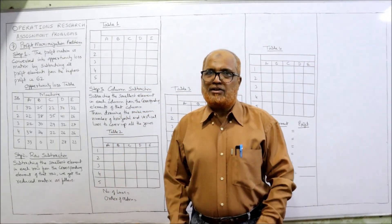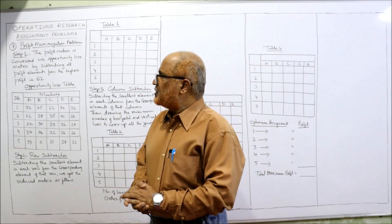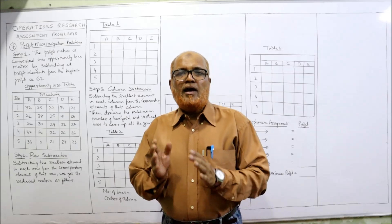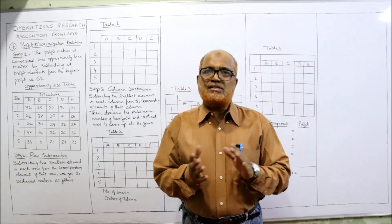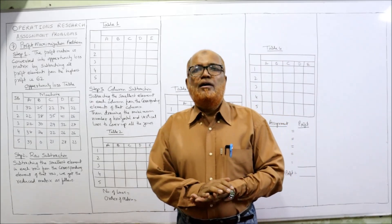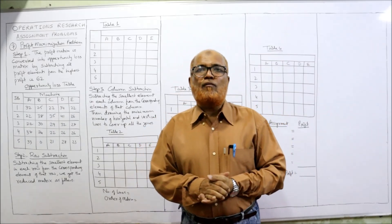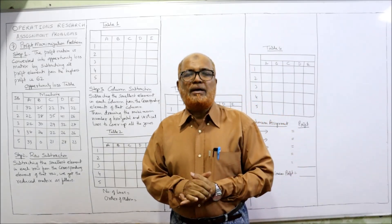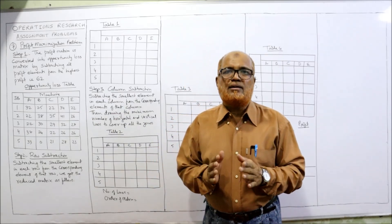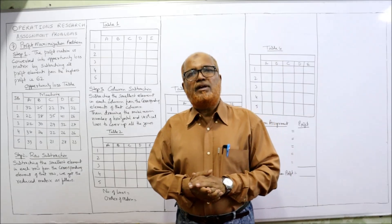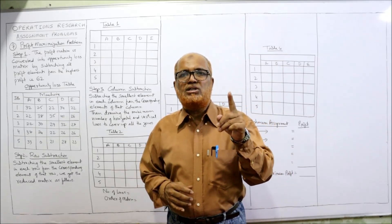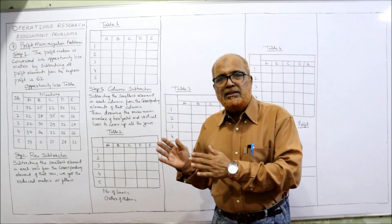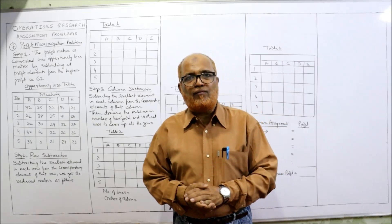Hello viewers, welcome to my channel. I'm Harsha Vali Khan. So far six problems have been completed on assignment. In this video, the seventh problem I am going to explain, and this problem is different from the first six problems. How it is different: this problem is concerned with profit maximization. The assignment algorithm given by the Hungarian mathematician is for minimization type problems, but in this problem we have to maximize the profit.